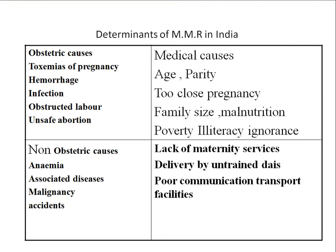The determinants of maternal mortality include obstetric and non-obstetric causes. Obstetric causes include toxemia of pregnancy. The maternal mortality rate indicates whether the healthcare delivery system is functioning properly in the community — it is a key assessment tool for healthcare delivery.